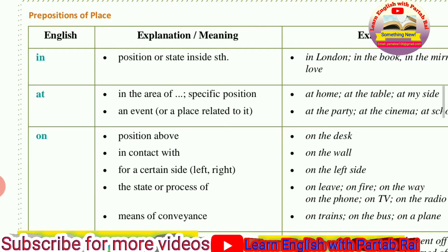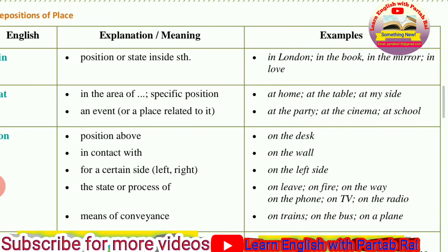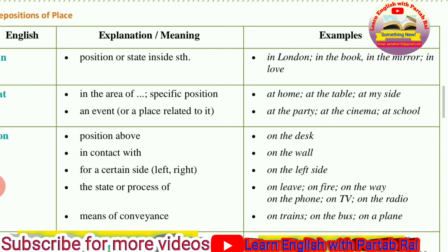After that we talk about the preposition AT. AT is used for a specific position, a particular location, or an event. When you talk about one particular position within a large area, or a specific location, you use AT. For example: at home, at the table, at my side, at the party, at the cinema — these are events. You may also say: at the bus stop, at the traffic lights, at 30th Avenue, at the reception, at the roundabout.